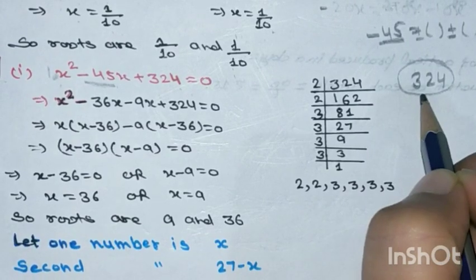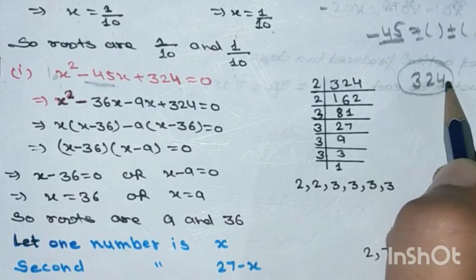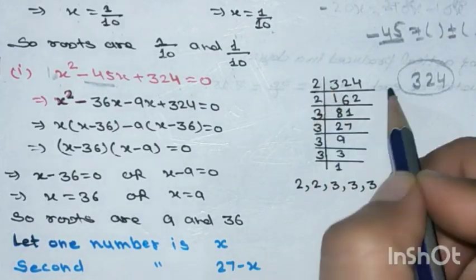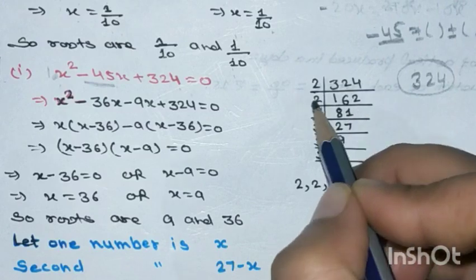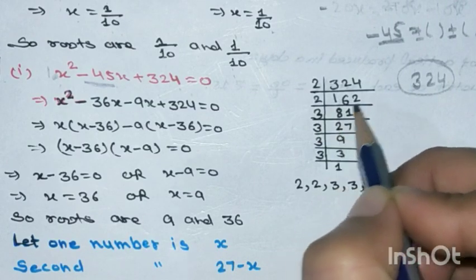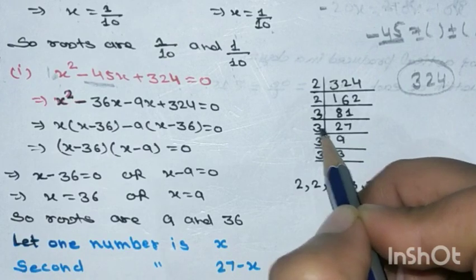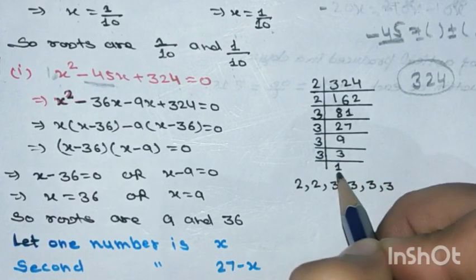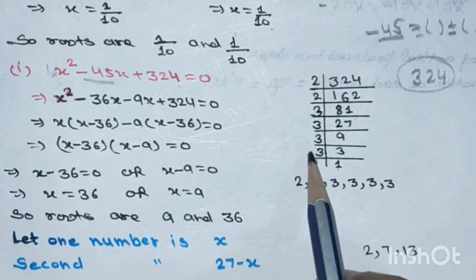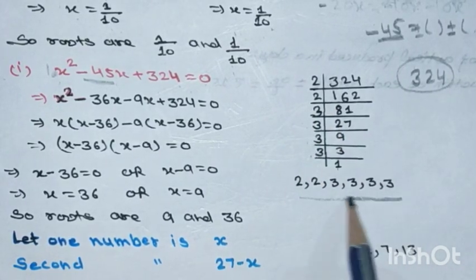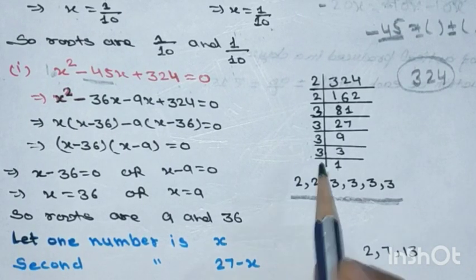To find the factors, we take the LCM of 324. Factorizing 324: 2 × 2 × 3 × 3 × 3 × 3. So the prime factors of 324 are 2, 2, 3, 3, 3, 3. We need to arrange these factors such that when added or subtracted the result is -45, and when multiplied the result is 324.